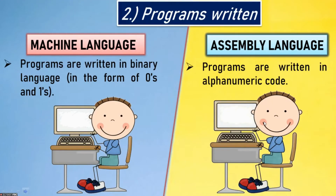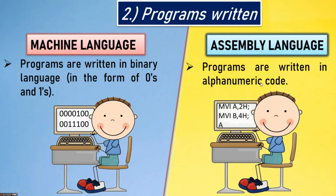Second point — programs written in. Machine language programs are written in binary language, or in the form of zeros and ones. Assembly language programs are written in alphanumeric code.